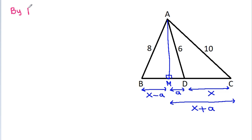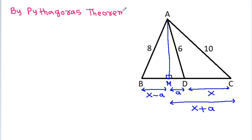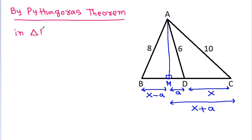By Pythagoras theorem, in triangle ABM: BM is X minus A.